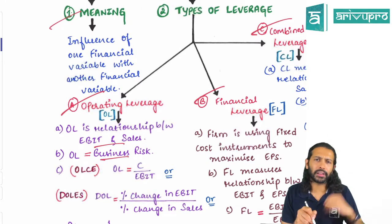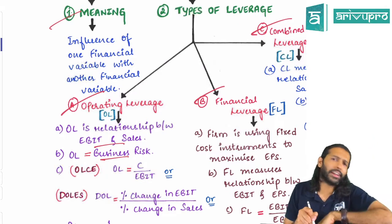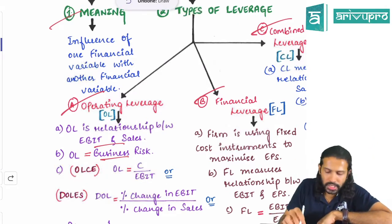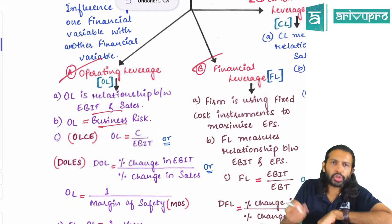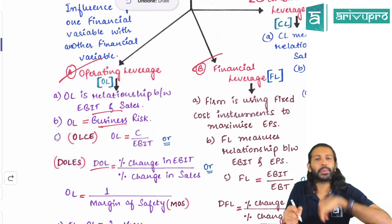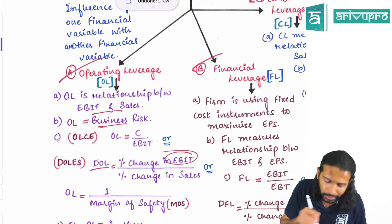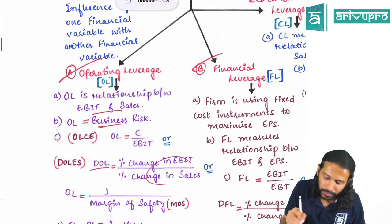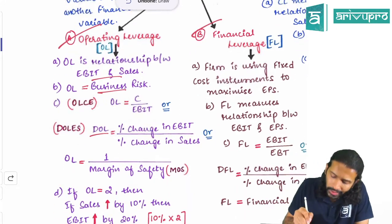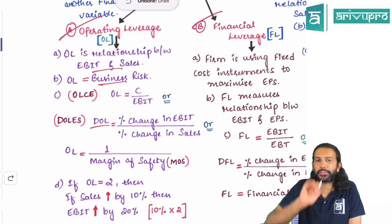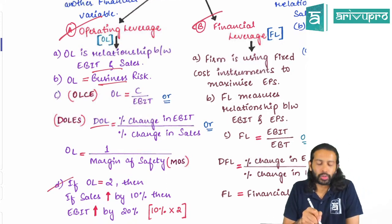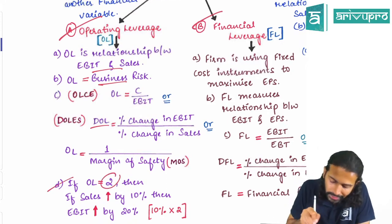There are three ways to find operating leverage. One is contribution divided by EBIT. The second approach — the degree of operating leverage (DOL) — is the percentage change in EBIT divided by percentage change in sales. The third approach is one divided by margin of safety.